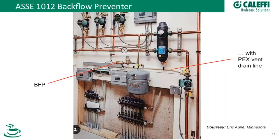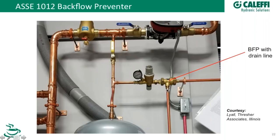This slide nicely illustrates containment and isolation again. They're containing the building on the supply side with a vertical double check, so nothing goes back into the city mains. Then they're isolating fire protection with a second double check, keeping their water safe from the fire protection system. The 1015 shown there is a low hazard backflow preventer, likely going to fire protection with no chemicals, but needing a backflow preventer because of the materials used in that fire protection system.